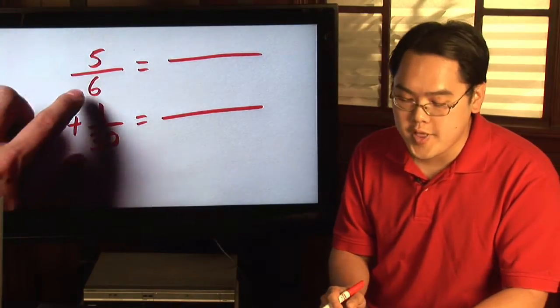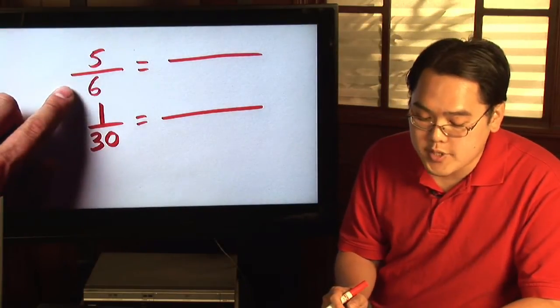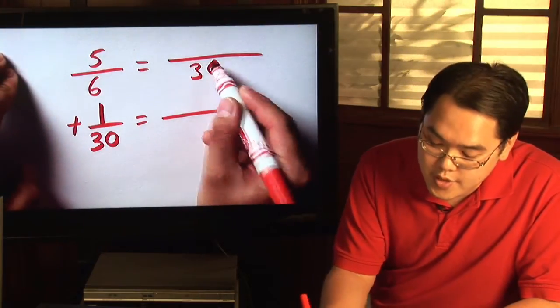We're talking about the smallest number that both of these numbers will divide into. Well, the least common denominator between six and thirty is actually thirty because six and thirty will both go into thirty.